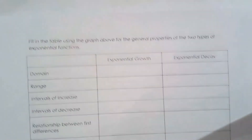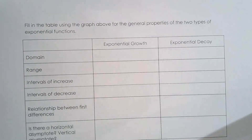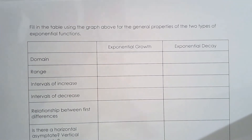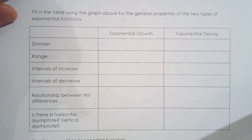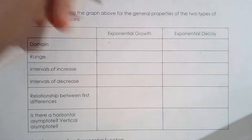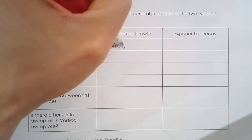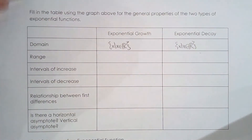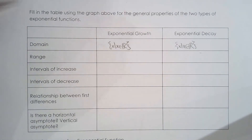Now let's look at some properties. I want you to fill in the properties for an exponential growth function and an exponential decay function — you already have the graphs from the first page. You can pause the video and fill in the table yourself. For exponential growth, the domain is all real numbers, which made studying exponential functions easy — no restrictions. The range is y greater than zero.